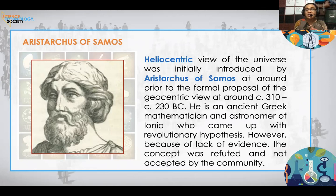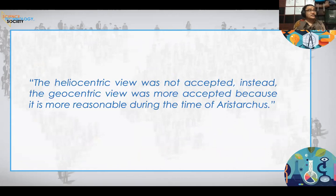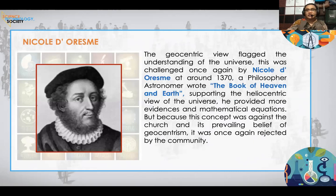However, because it lacked evidence and explanation, heliocentrism was not immediately accepted by the majority. It was easier to believe that the Earth was the center of the universe. The geocentric view was more accepted because it was more reasonable during the time of Aristarchus — based on the initial observations of common people at that time, such as the rising and setting of the sun and moon.